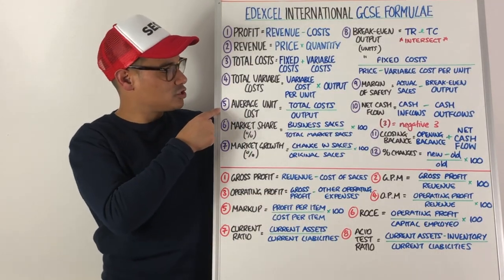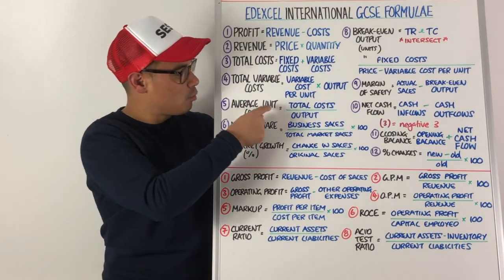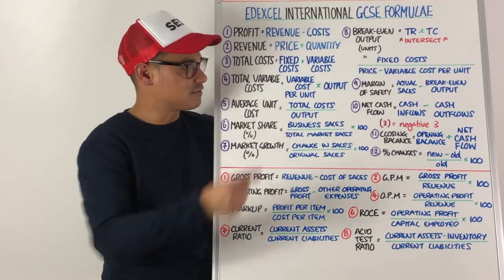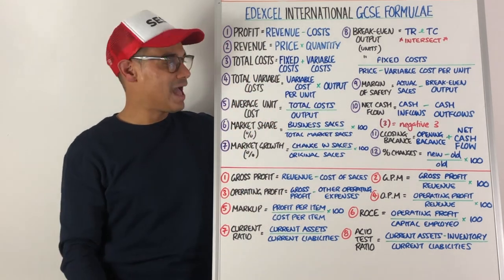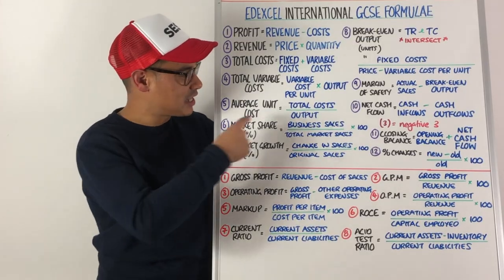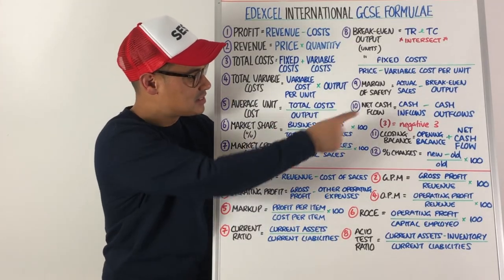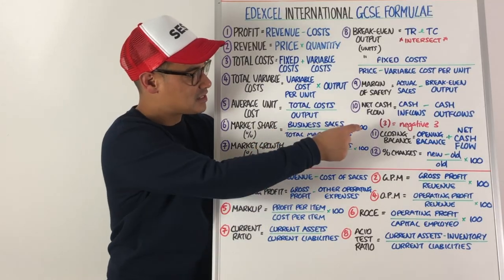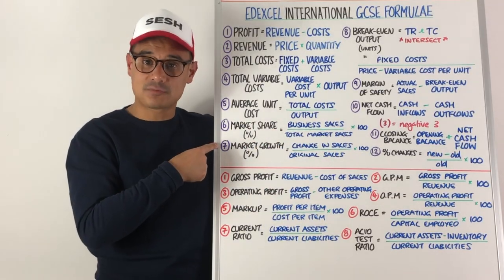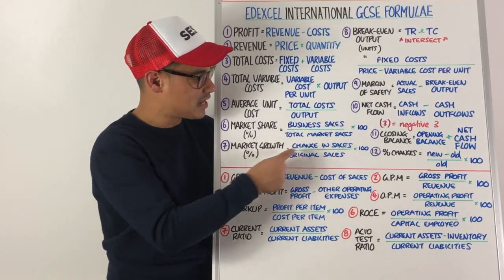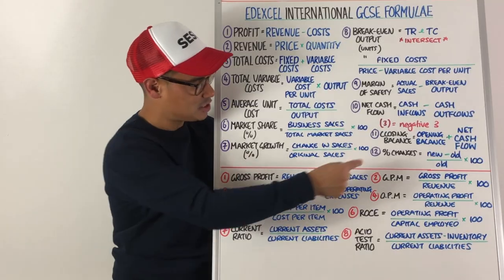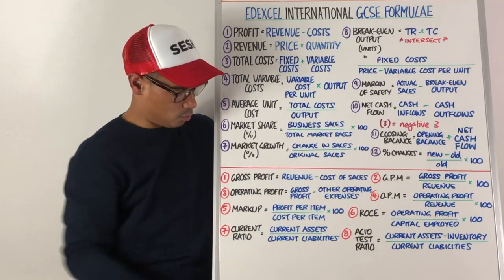Number five is your average unit cost — your average cost per unit. Well, that's just like any average: it's your total cost divided by your output. Number six, your market share expressed as a percentage, is business sales divided by total market sales times by 100. Number seven, your market growth expressed as a percentage, is change in sales divided by original sales times by 100.